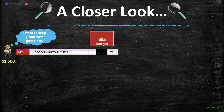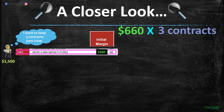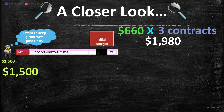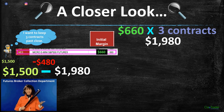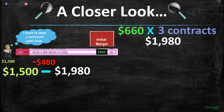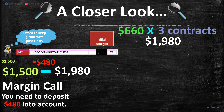Because he wants to hold past the close, this is where initial margin comes into play. That's $660 per contract, and he wants three contracts — so that equals $1,980. He has an account of $1,500. Subtracting $1,980 means he's $480 in the hole. Not good — that would not be acceptable. His broker would not appreciate that.